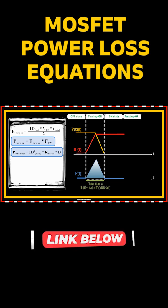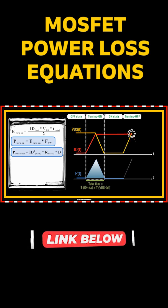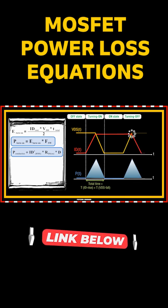Now let's have a look at the last type of losses: turn-off losses. It works the same way as the turning-on process but in reverse. When switching off the MOSFET, voltage rises while current is still flowing.